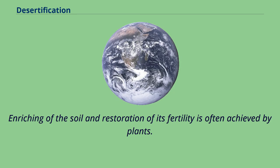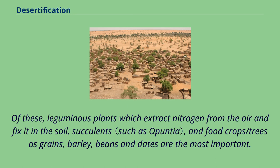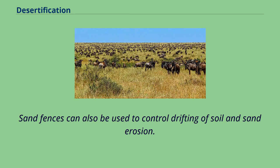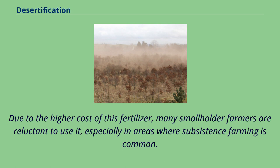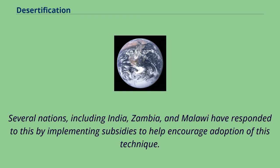Enriching the soil and restoring its fertility is often achieved by plants. Leguminous plants extract nitrogen from the air and fix it in the soil; succulents and food crops such as grains, barley, beans and dates are the most important. Sand fences can also be used to control drifting of soil and sand erosion. Another way to restore soil fertility is through the use of nitrogen-rich fertilizer. Due to the higher cost, many smallholder farmers are reluctant to use it, especially in areas where subsistence farming is common. Several nations including India, Zambia and Malawi have responded by implementing subsidies to help encourage adoption of this technique.